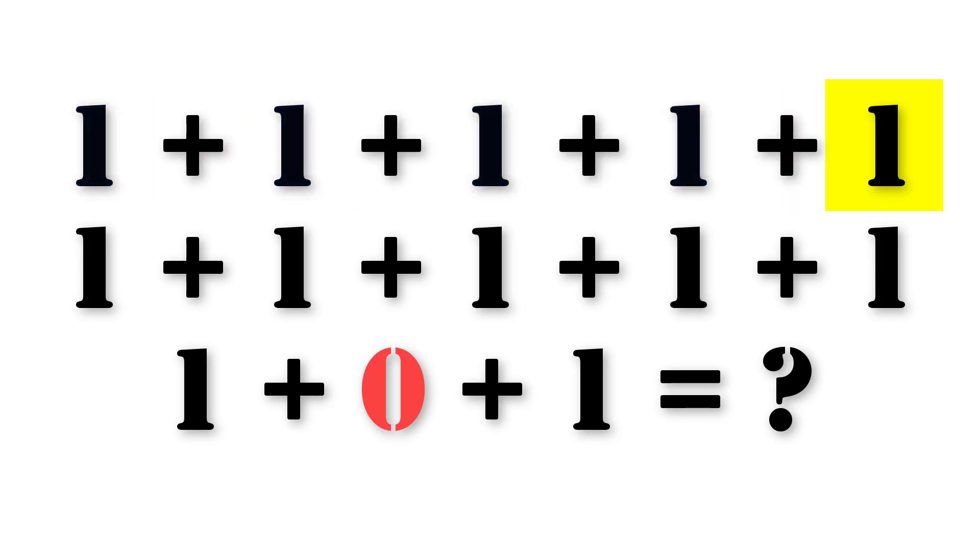But the other 1 doesn't have an operation next to it, such as plus, minus, multiply, or divide. So you have to assume that this 1 and that 1 is the number 11.